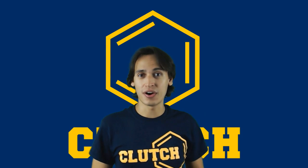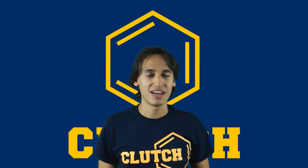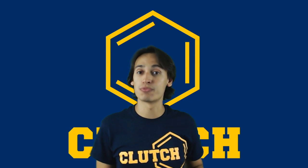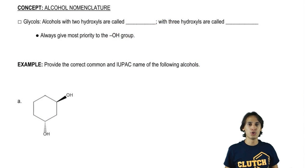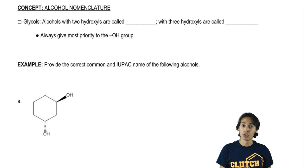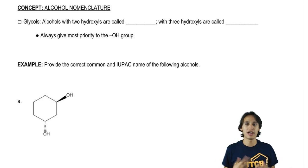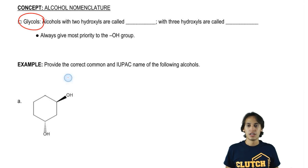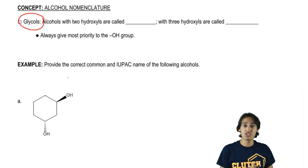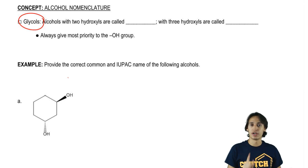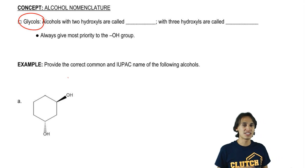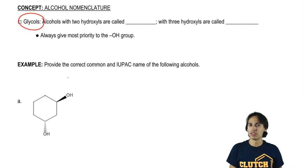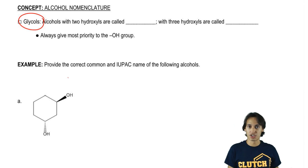A functional group that we definitely need to know how to name is alcohols, and they're really not so hard. A word we use to describe a molecule that has more than one OH, or more than one hydroxyl on the carbon chain, is a glycol. Glycol is a very unspecific word because it just refers to any molecule that has more than one hydroxyl on it, so a lot of times we're going to use a more specific term.